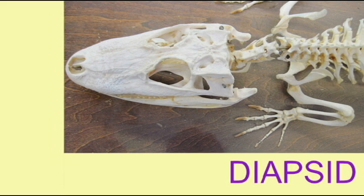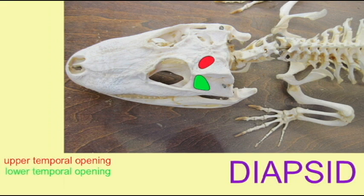Diapsid reptiles evolved into a number of lineages. Here you can see that this alligator skull has an upper temporal opening and a lower temporal opening, and thus alligators are diapsids.